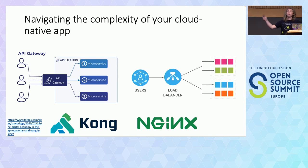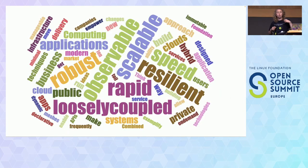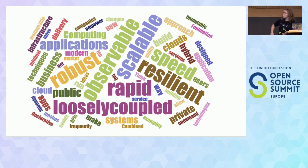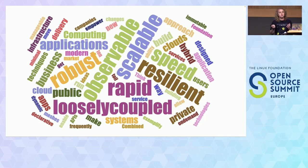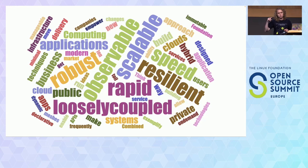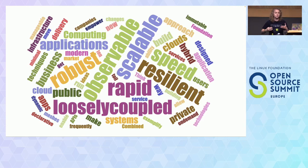By going through all of these stages and looking at all these various different elements of cloud native, hopefully what we should achieve is all of these characteristics: being resilient, observable, scalable, and having rapid deployments. Really, this is what it means to be cloud native - these characteristics. It doesn't mean having microservices, having stateless microservices, using a particular language or platform. It's just making an application that does all of these key characteristics and behaviors.